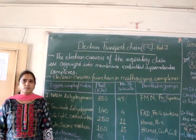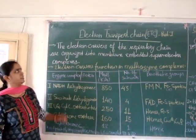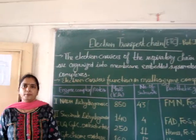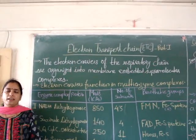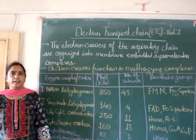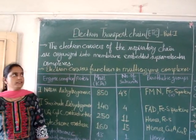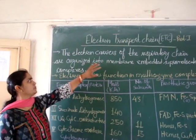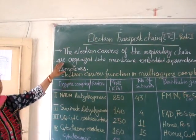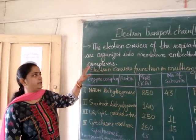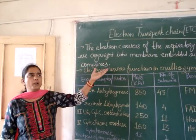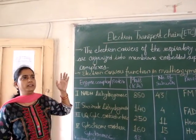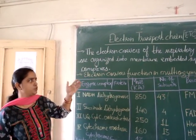Hello everyone. Today we will study about the electron transport chain. In the previous videos we have seen the universal electron carriers. The electron carriers of the respiratory chain are organized into membrane supramolecular complexes, meaning they are not found in individual form.